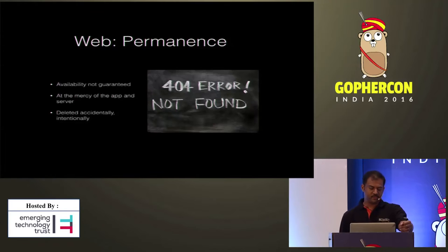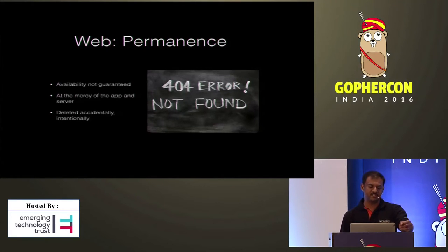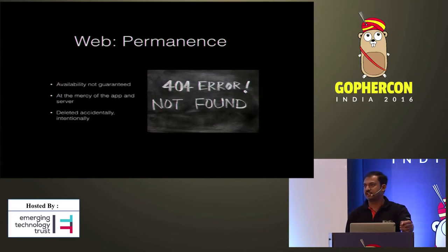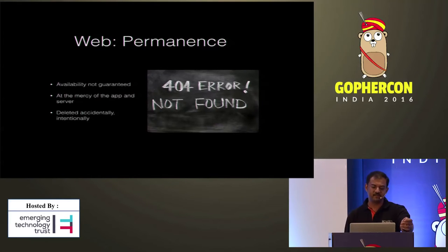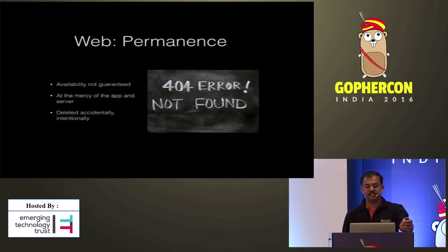Next, we move on to permanence — it is about the availability of content. Unfortunately, the web doesn't provide any guarantee for content stored on a server. The content is at the mercy of the app and the server where we store it, and frequently content is deleted accidentally, or sometimes intentionally for reasons like censorship.